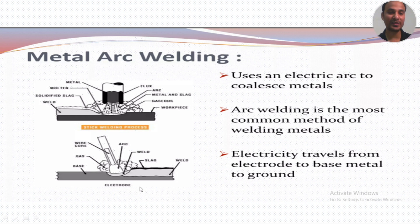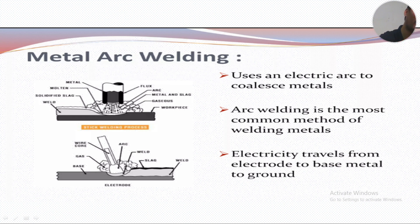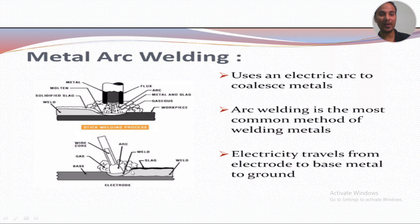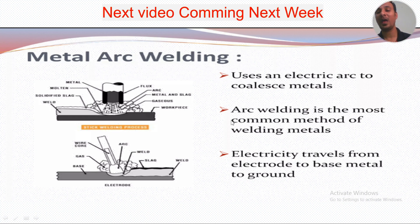In the SMAW process, the electrode and flux work together — the flux acts as a shield for the weld pool, creating gases that protect it from the atmosphere. The result is the base metal and weld slag. In metal arc welding, the most common method, electricity travels from the welding electrode to the base metal, which is arc-grounded.